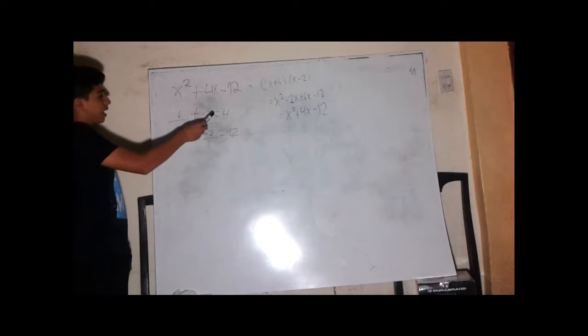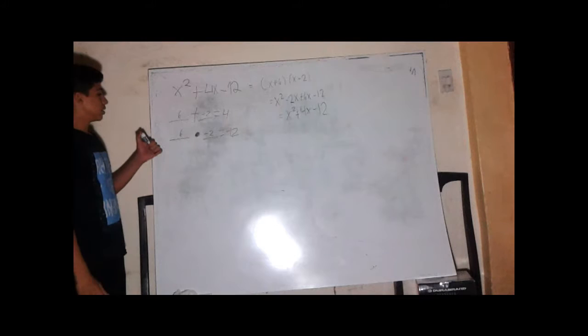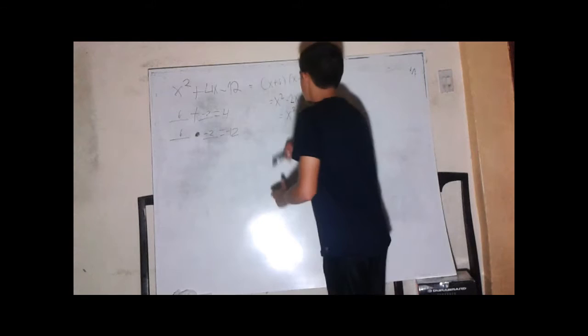I'm going to explain how to solve a quadratic equation. First, we have to find two numbers that added equal 4x and multiplied equal negative 12. These two numbers are 6 and negative 2.